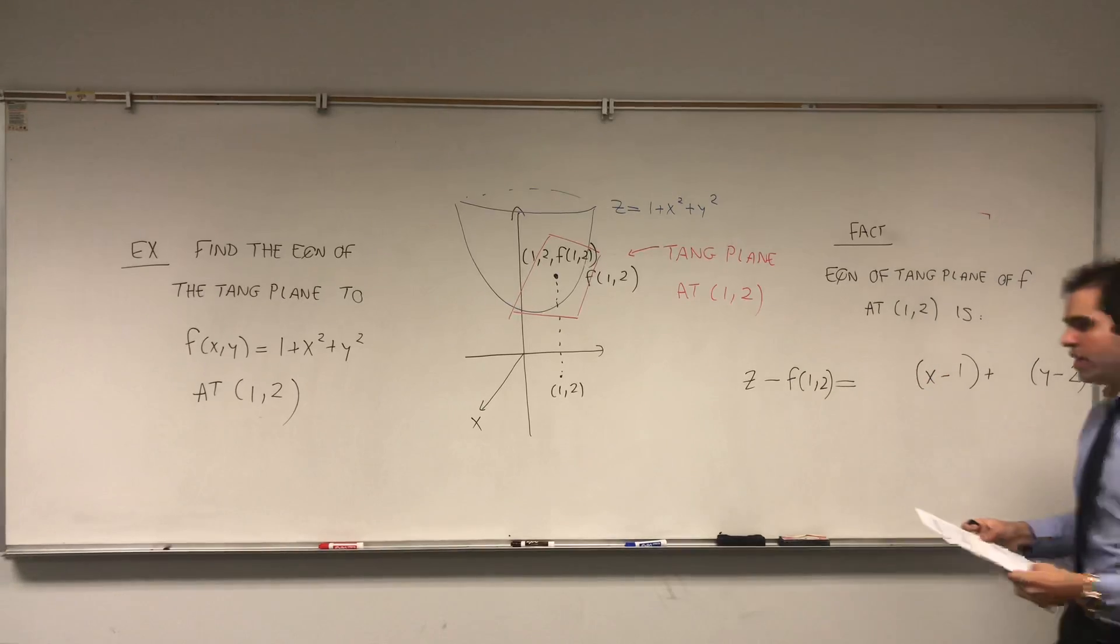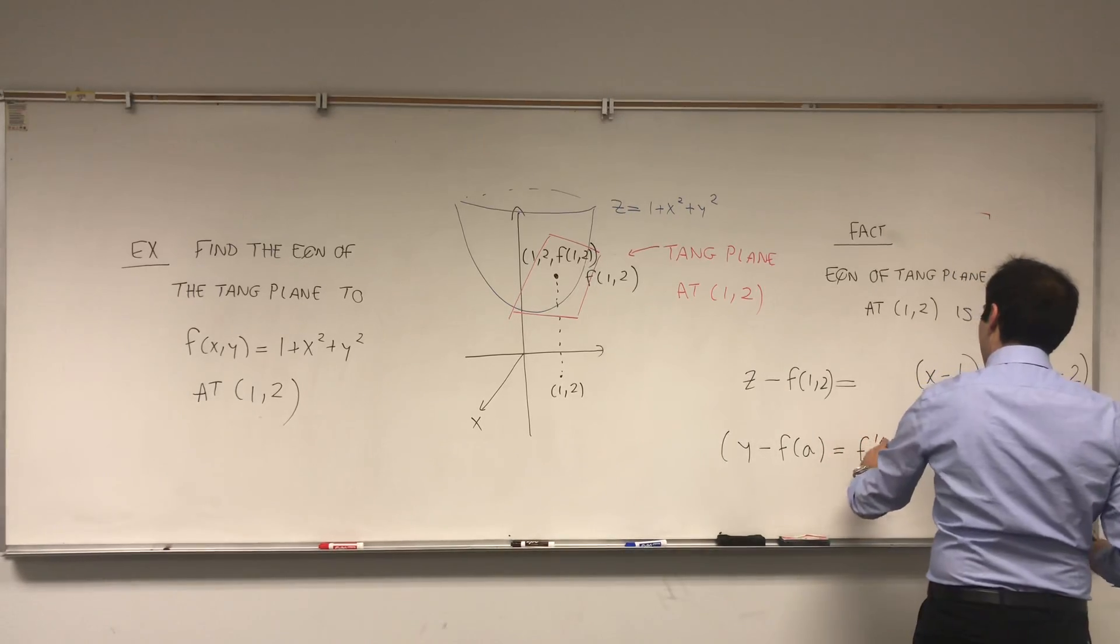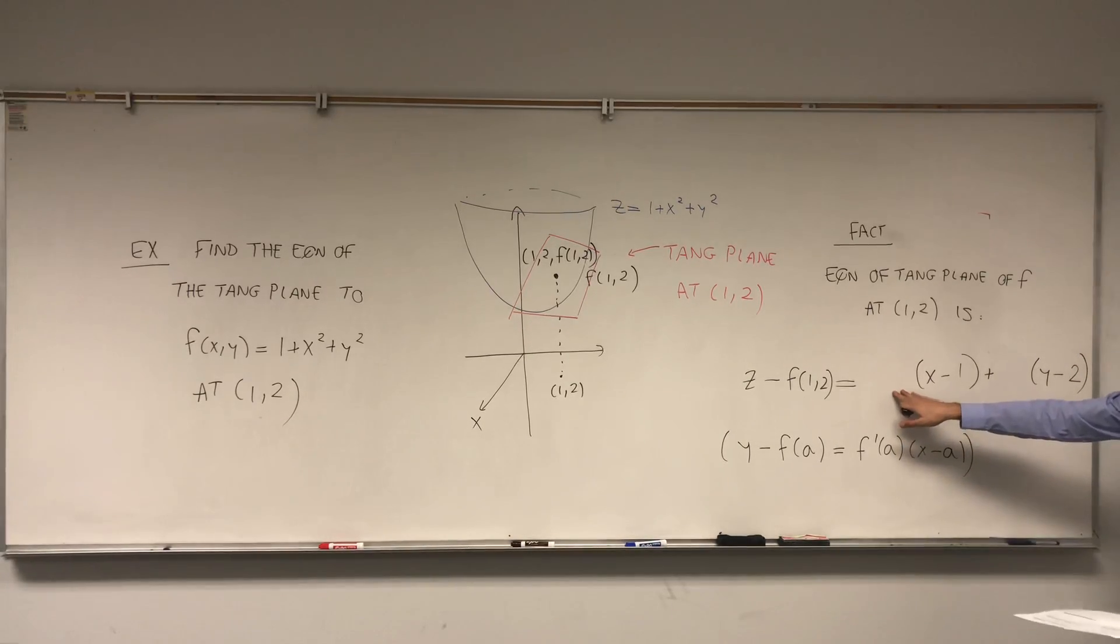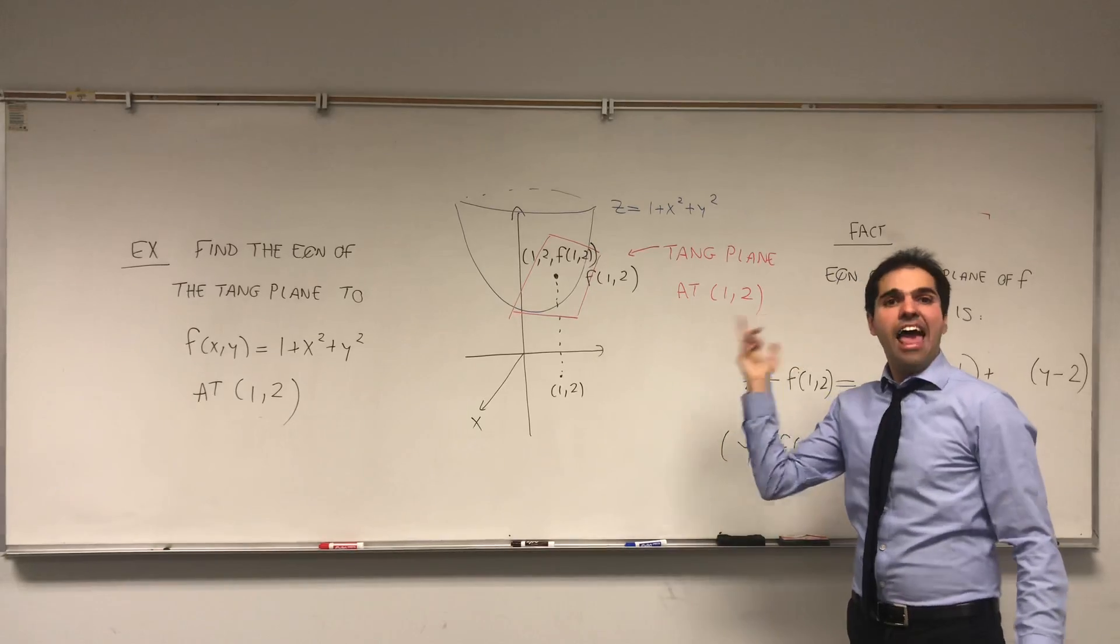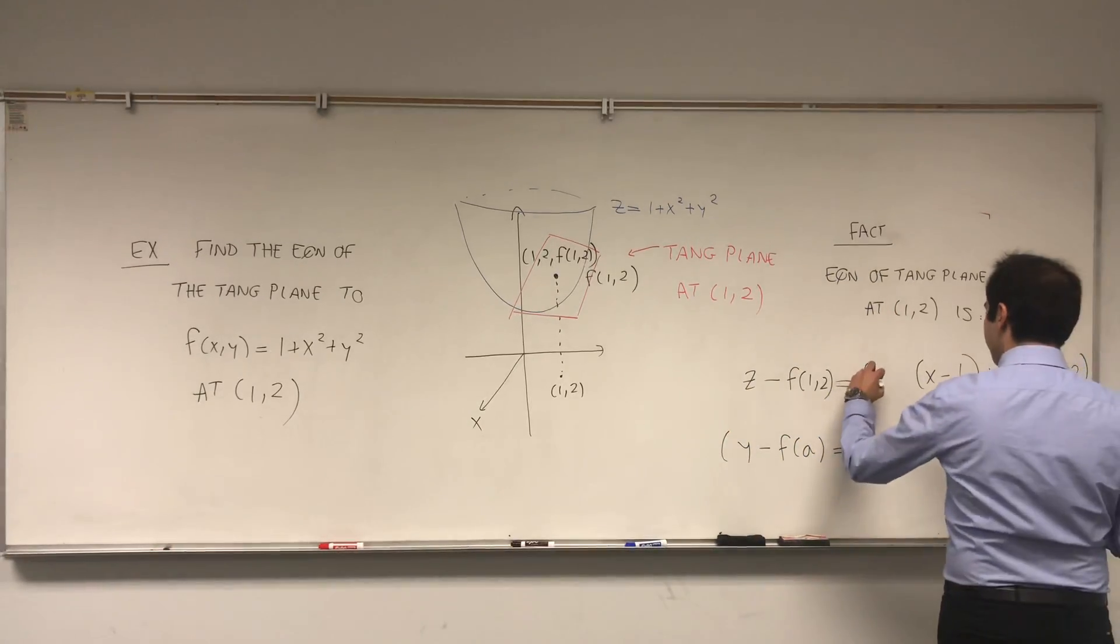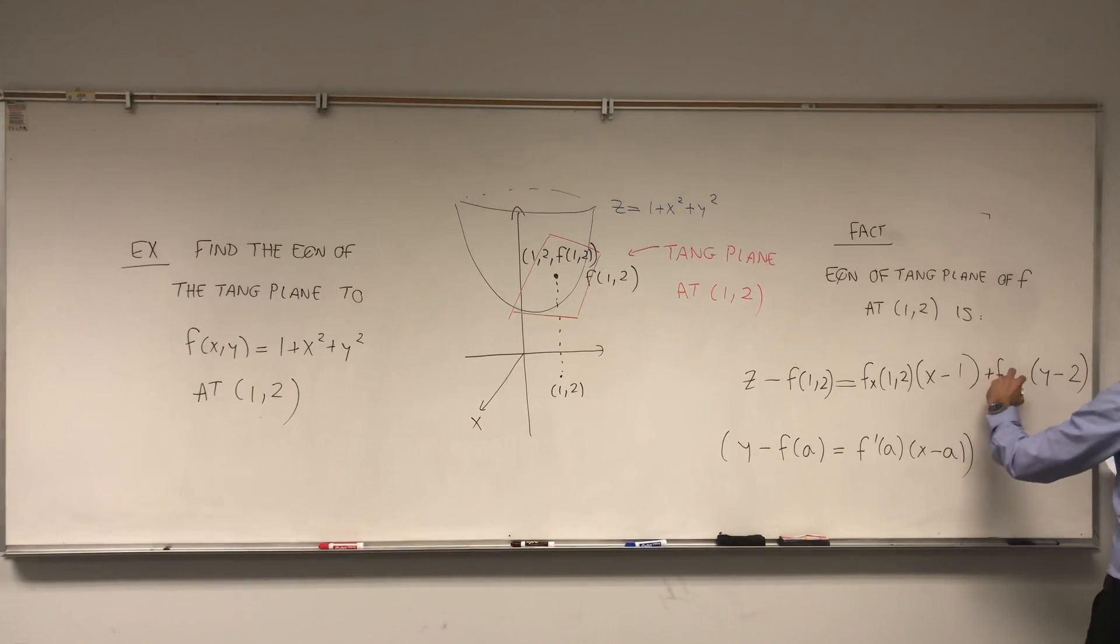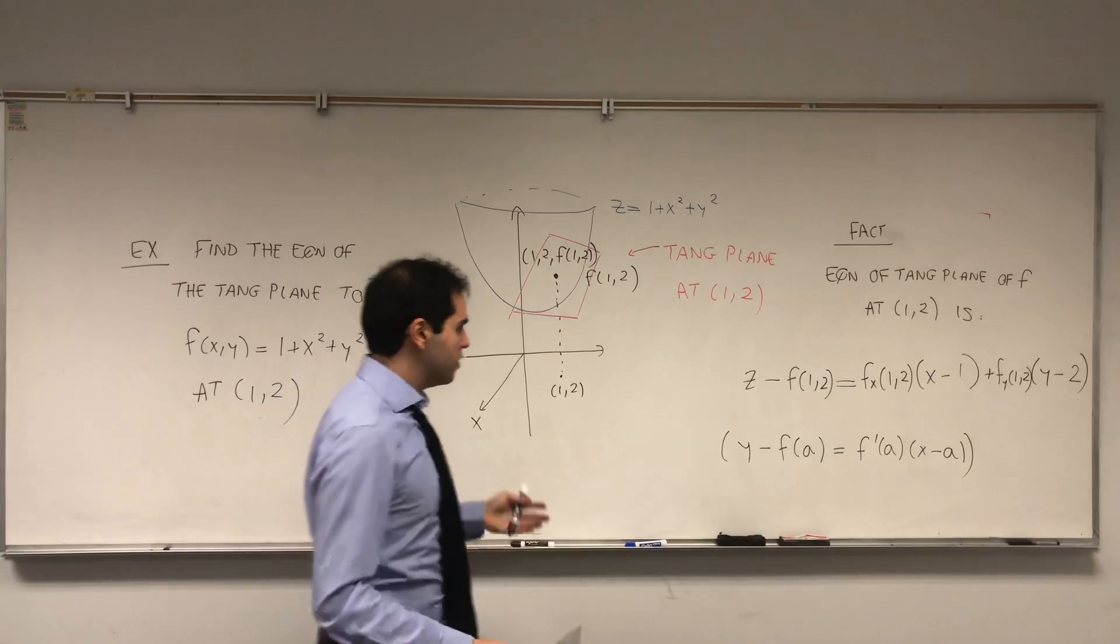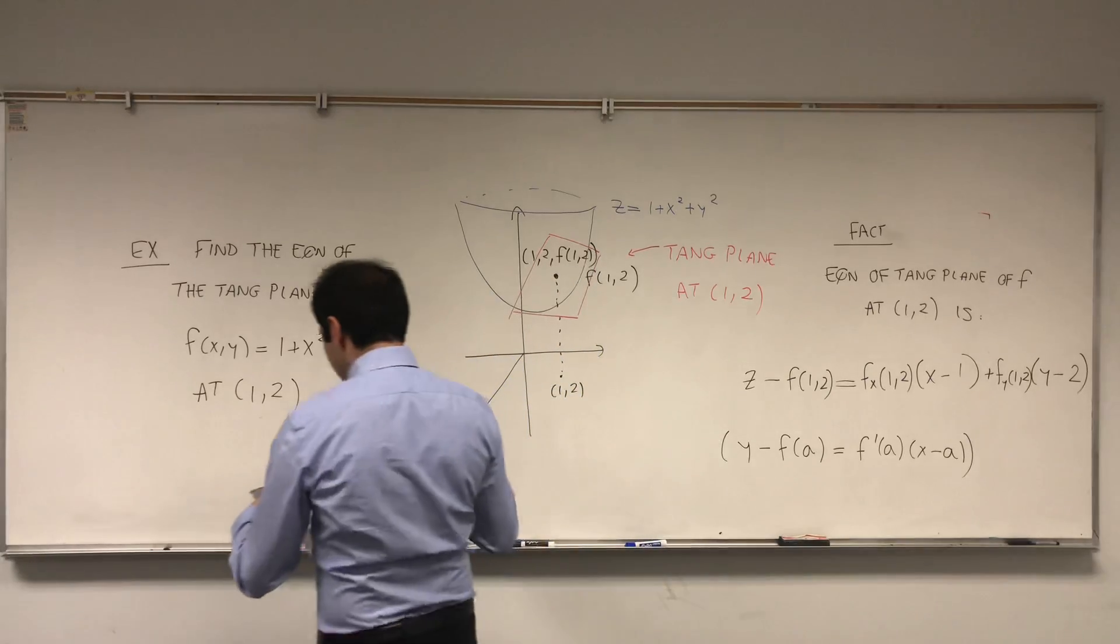And now remember, before what we had was y - f(a) = f'(a)(x - a). And what we would like to have now is just a bunch of slopes. And what this becomes is the slope of f in the x direction, which we call fx. So the partial derivative, but not at an arbitrary point, but at the point (1,2). And similarly, the partial derivative of f with respect to y at the point (1,2). So that is the equation of the tangent plane.